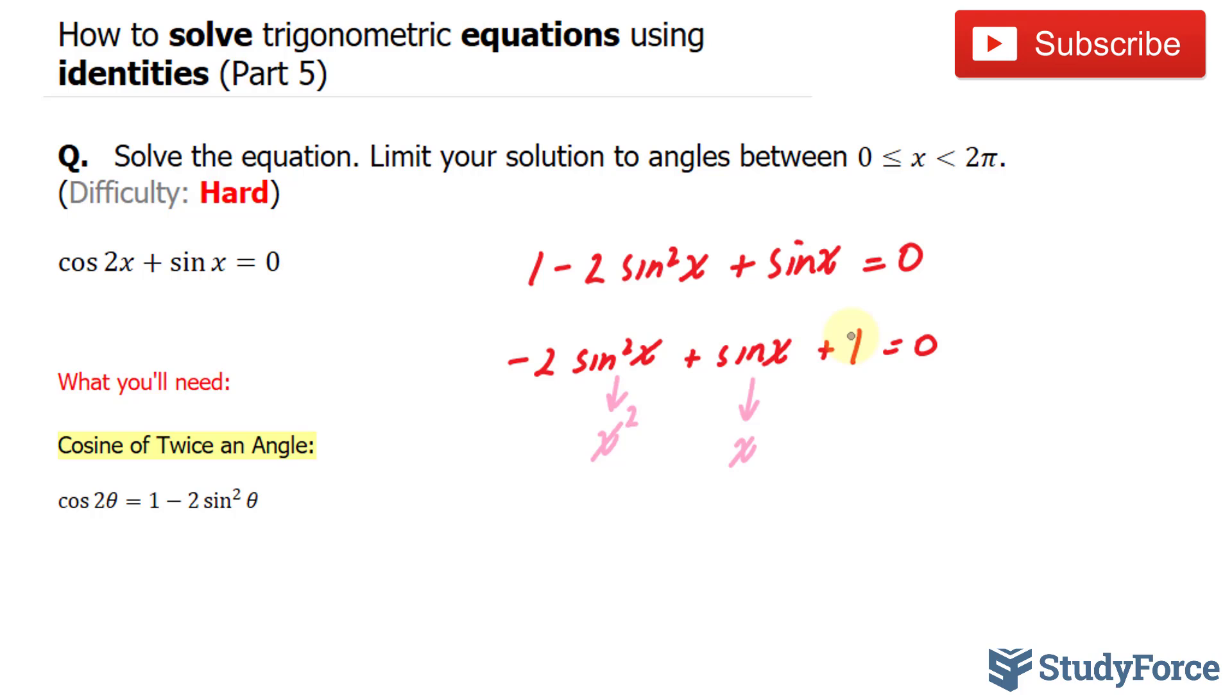Now, of course, I can multiply the left and the right side by negative one. That will get rid of this leading negative number. So we end up with positive two sine squared x minus sine x minus one is equal to zero.